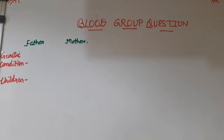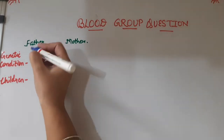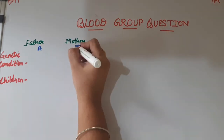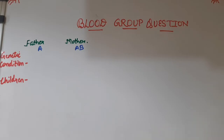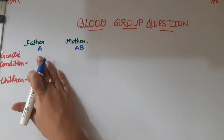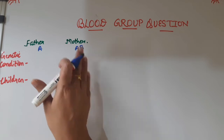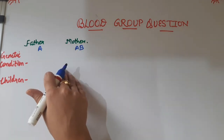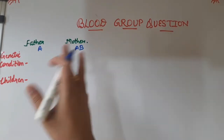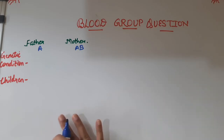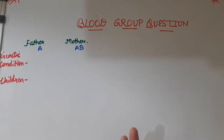The condition given to us is that father belongs to blood group A and mother belongs to blood group AB. There is a video on my channel where we discuss that if somebody belongs to blood group A or AB, what are the allelic or genetic conditions a person can have. If you are clear on what the genetic condition of a person is, it will be very easy to solve such questions. This is a very important topic for your board exam as well as for objective questions.